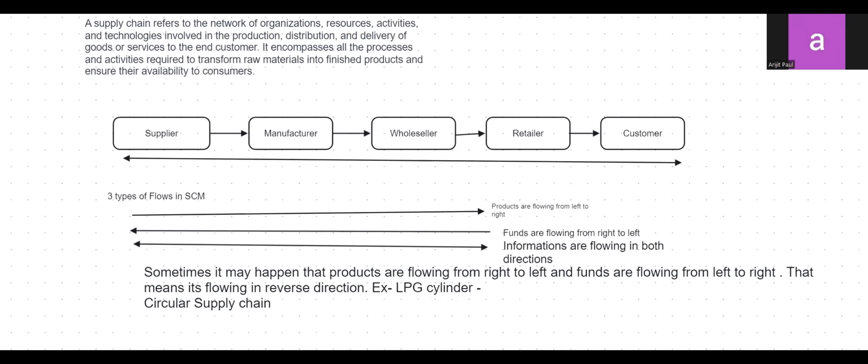The third flow is information, which flows in both directions. For example, if the manufacturer wants raw materials from the supplier, they send information to the supplier. The supplier sends information back saying the materials are not currently available and will take some time. Similarly, a customer places an order with the retailer, who places it with the wholesaler, who places it with the manufacturer, who contacts the supplier — and the supplier informs the manufacturer that the raw materials will take at least 20 days.